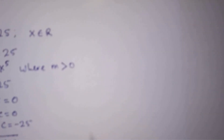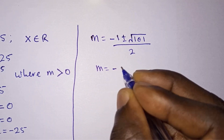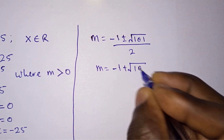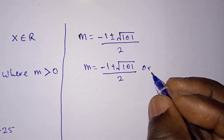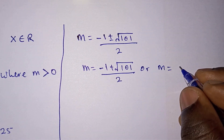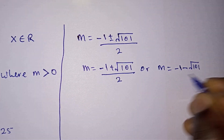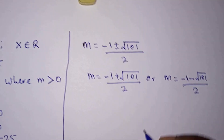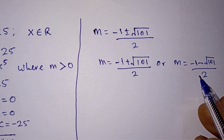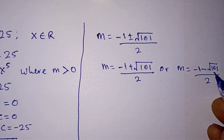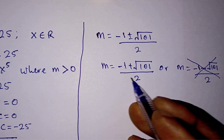So it is either m equals negative 1 plus square root of 101, divided by 2, or m equals negative 1 minus square root of 101, divided by 2. Now, recall that m is greater than 0. The second value of m is negative, so it is less than 0. Therefore, we are not going to consider that value of m.